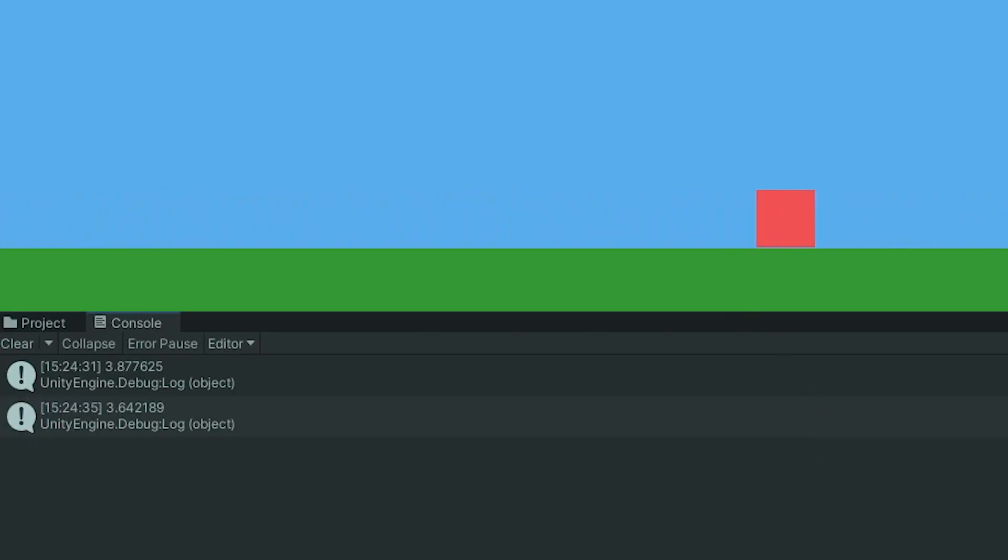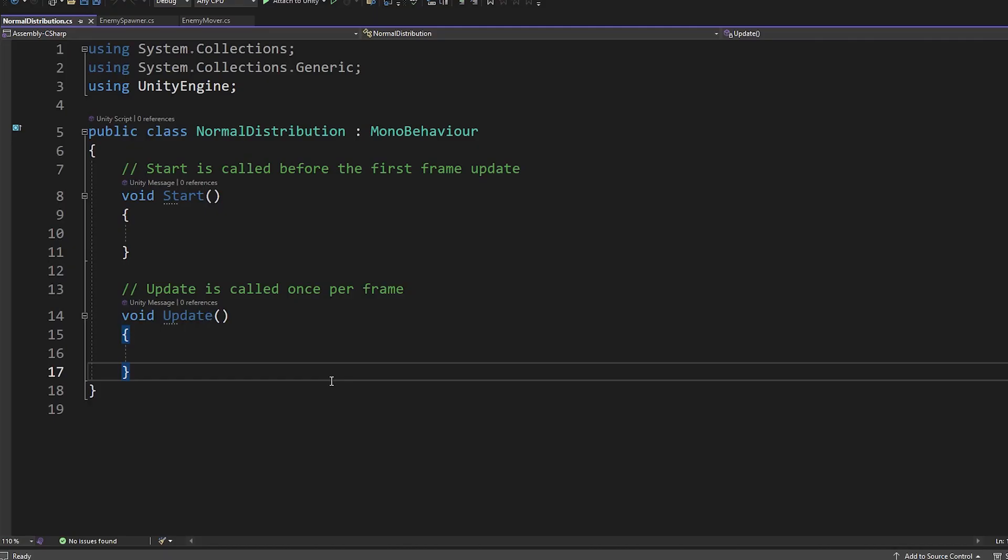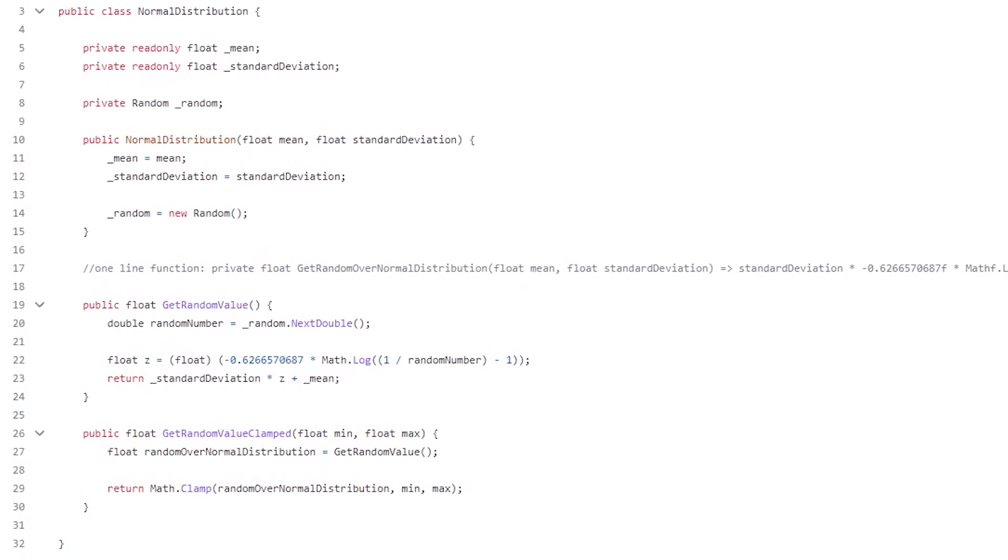Heading back into Unity, we can hit play, and our implementation, believe it or not, is complete. However, I don't know about you, but I don't like having long, unreadable one-line functions. So I'm going to quickly implement this in a different, more readable way. So the first thing I am going to do now is paste in this new class called normal distribution. A link to this code will be in the description.